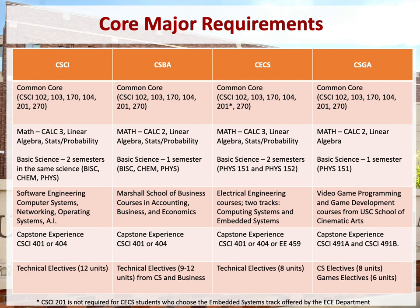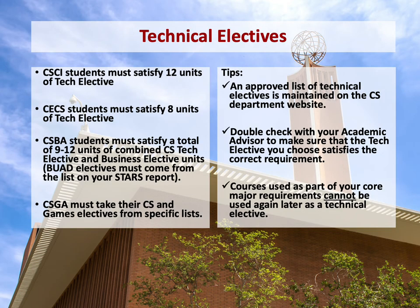Below is a chart of the core major requirements for each of the computer science programs offered here at USC. You'll be able to go over these major requirements with your academic advisor during the semester when you discuss long-term course planning. Please note that for the computer engineering and computer science major, the requirements listed are for the computing track only. For each of our computer science programs, there is a technical elective requirement. There is a technical elective list maintained on the computer science website. Before enrolling in technical electives, we recommend having your academic advisor double check that the technical elective you chose satisfies the correct requirement. Courses used as core requirements are not eligible to be used as technical electives.